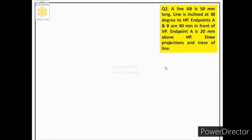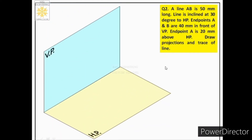Now let us discuss the second case of line through the statement. A line AB is 50 mm long. The line is inclined at 30 degrees to HP. Endpoints A and B are 40 mm in front of VP. Endpoint A is 20 mm above HP. Draw projections and trace of line.